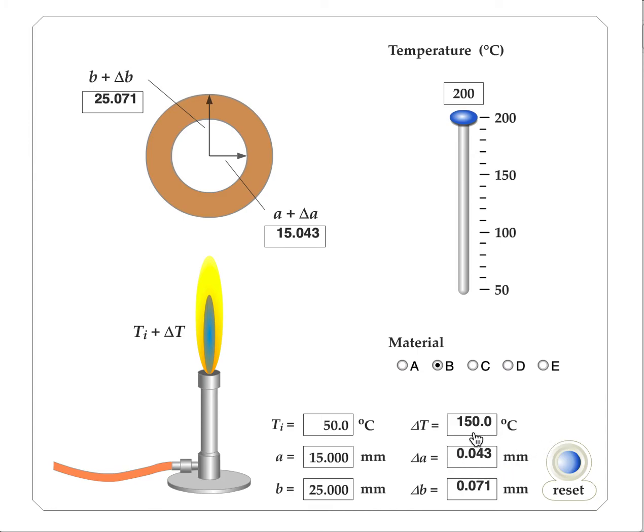And so when the change in temperature is 150 degrees Celsius, going from 50 to 200, in this case the inner radius has changed by 0.043, and the outer radius has changed by 0.071.